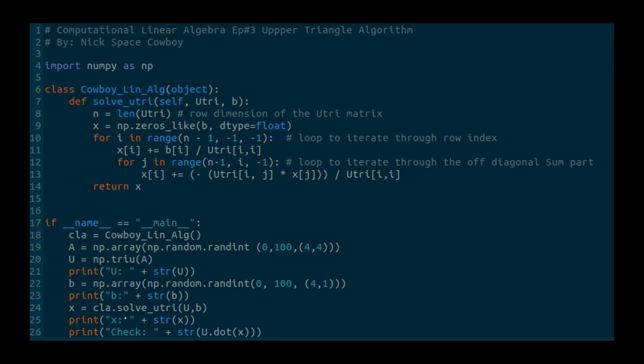Now, in the code, we're calling CLA solve U-tri because I called this as a cowboy lineage. I just called it CLA. And we're calling, obviously, the U-tri function. And then we're going to print out our solution that we end up finding. And then we're going to check it by performing U-X and just ensuring that we actually get out B. So let's go to the terminal and see what the terminal spits out.